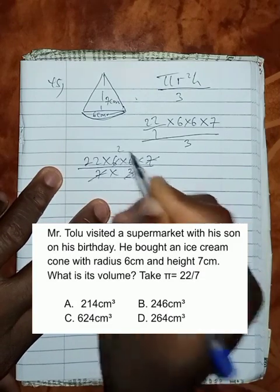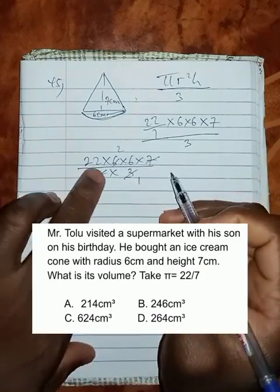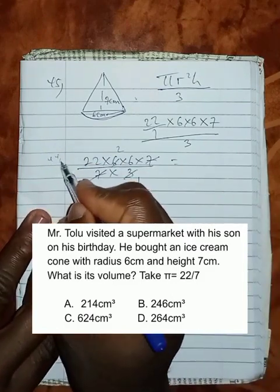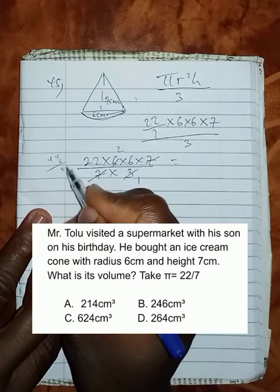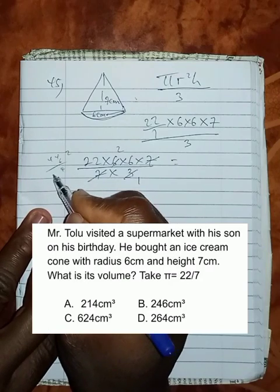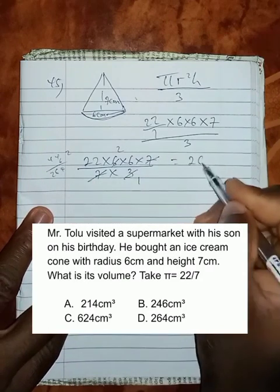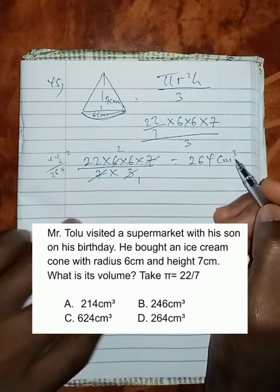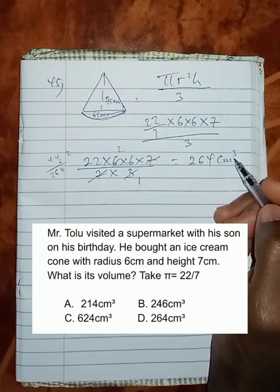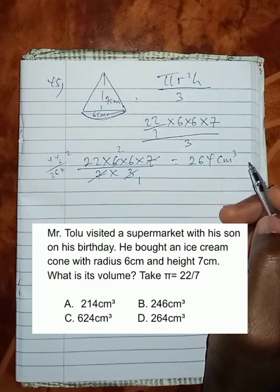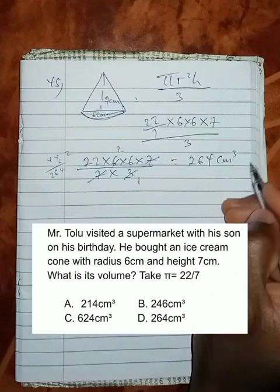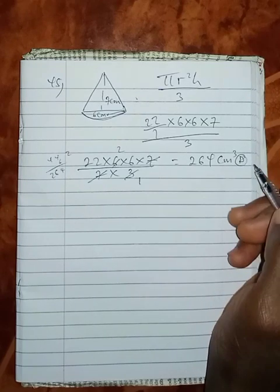7 cancels out. 3 here 1, 3 here 2. This becomes 2 times 2 is 44. 44 multiplied by 6 gives us 264 cm cubed as the volume, and we can see that that is option D.